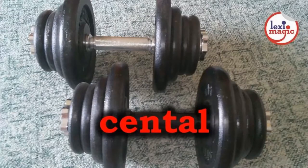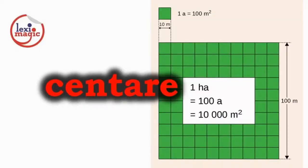Cental is a unit of weight equal to 100 pounds. Centiare is a unit of measurement equal to one hundredth of an are, which is equal to one hundred square meters.